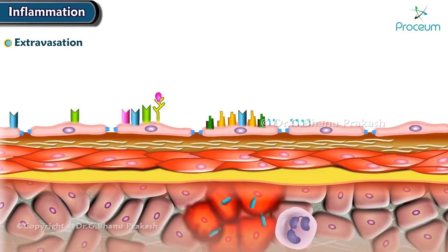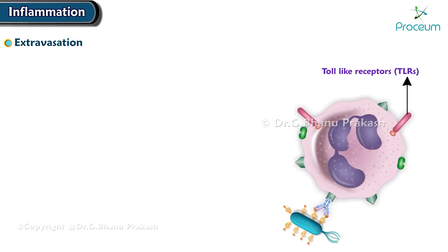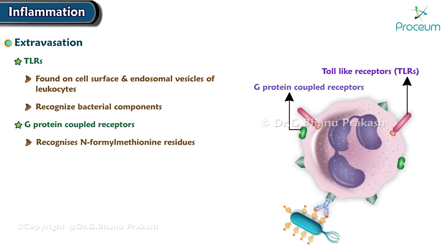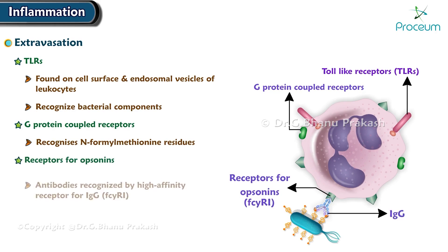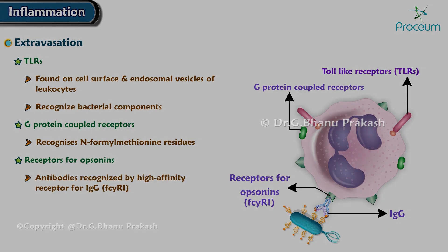We'll end this section by talking about the recognition of microbes and dead tissue. Toll-like receptors, or TLRs, are found on the cell surface and endosomal vesicles of leukocytes, and they recognize bacterial components. G-protein-coupled receptors recognize N-formylmethionine residues. Finally, there are receptors for opsonins — immunoglobulin G antibodies are recognized by a high-affinity receptor called FcγRI.